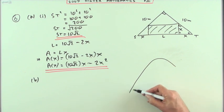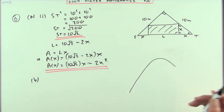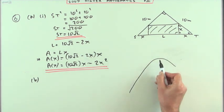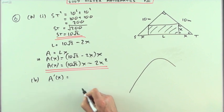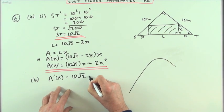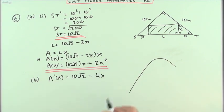So it's just like finding stationary points. So I take my A of x and I differentiate it. So that's going to be 10 root 2 minus 4x.